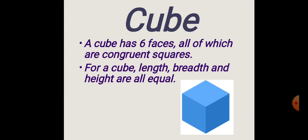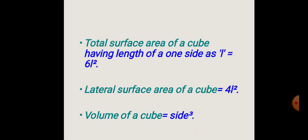A cube has 6 faces, all of which are congruent squares. For a cube, length, breadth, and height are all equal. The total surface area of a cube is made up of 6 square faces. So, taking one side as L, the area of one square face is L squared, and the total surface area of a cube is 6L squared.